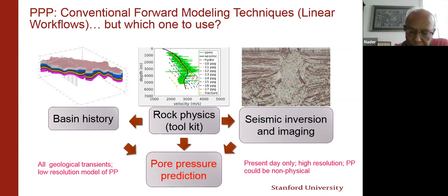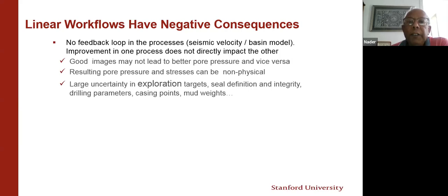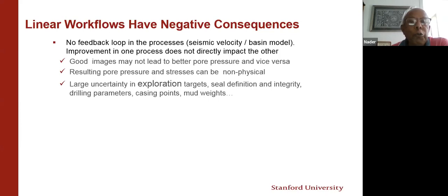We want to build on these strengths and hopefully minimize weaknesses, though not completely eliminate them. There is no feedback loop in the linear process — for example, between seismic velocity and basin model. An improvement in one process does not directly impact the other. Good images may not lead to better pore pressure. That is a negative consequence of linear workflow. The pore pressure can be non-physical — below hydrostatic. In seismic, velocities are often too fast. Fast velocities are good for stacking sometimes, but in the process you degrade the quality of the pore pressure.